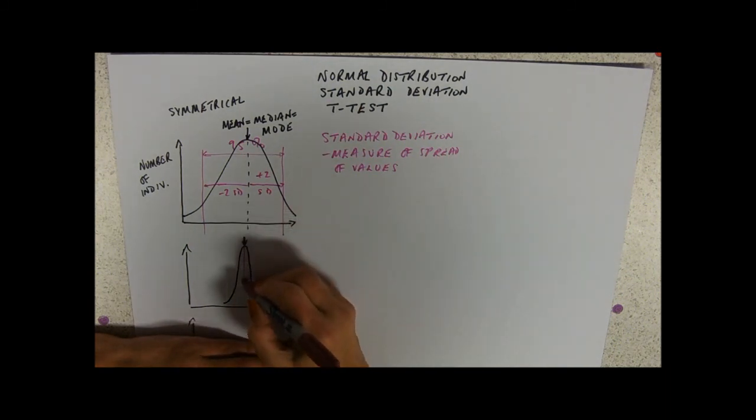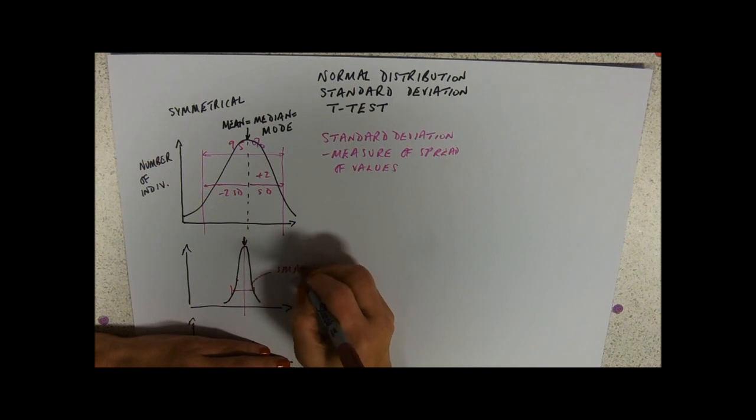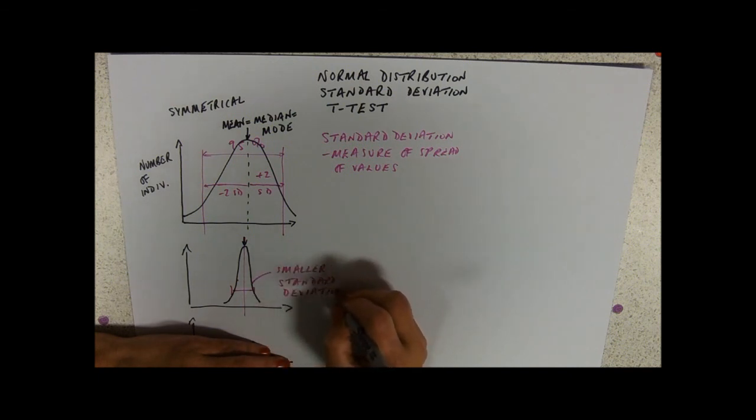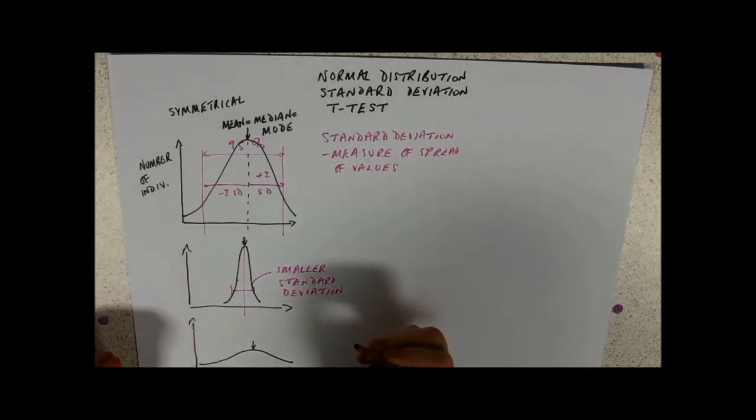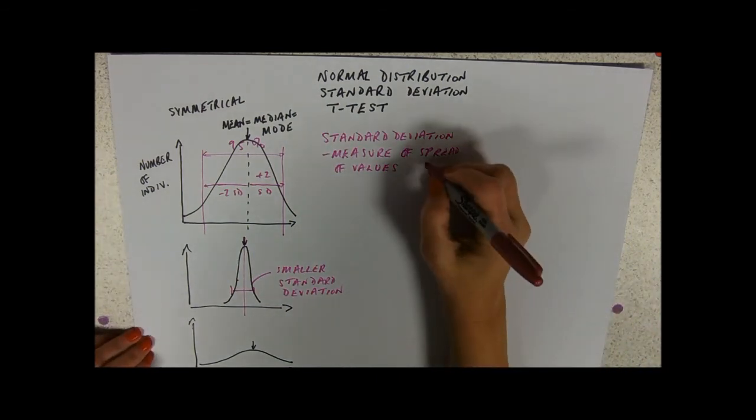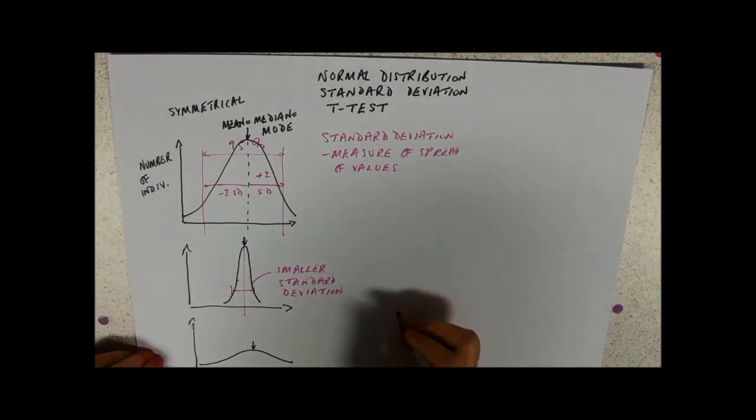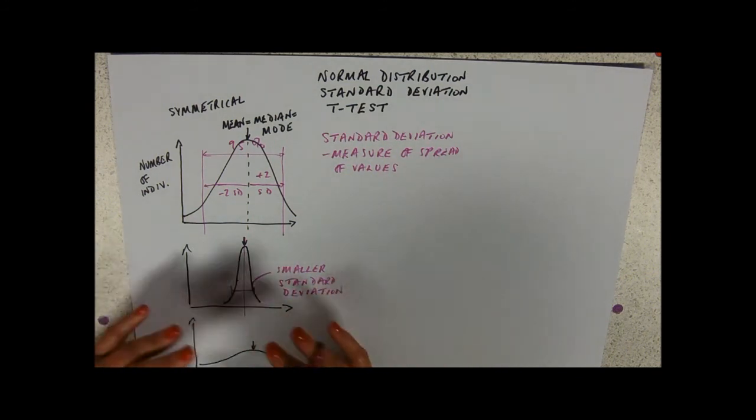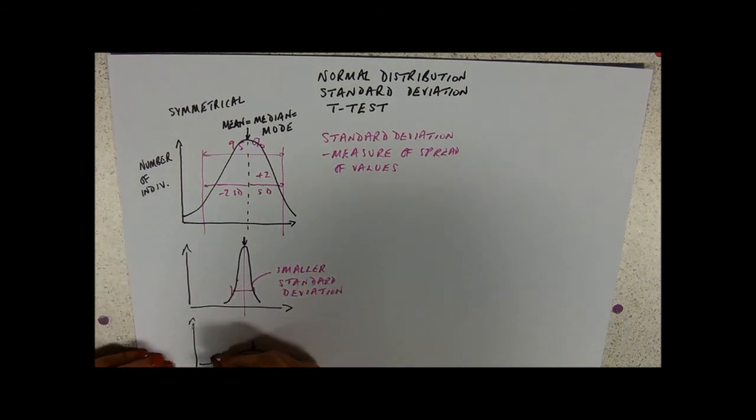If we were looking at where 95 percent of this data is, we'd be looking at a smaller standard deviation. You're really eliminating those extremes. You're measuring out how spread out those values are, so the larger the standard deviation, the more spread out. This one would have a much larger standard deviation.